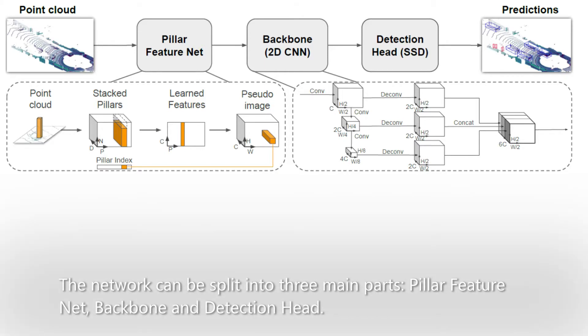On the image, the PointPillars architecture overview is presented. The network can be split into three main parts: Pillar FeatureNet, Backbone, and Detection Head.